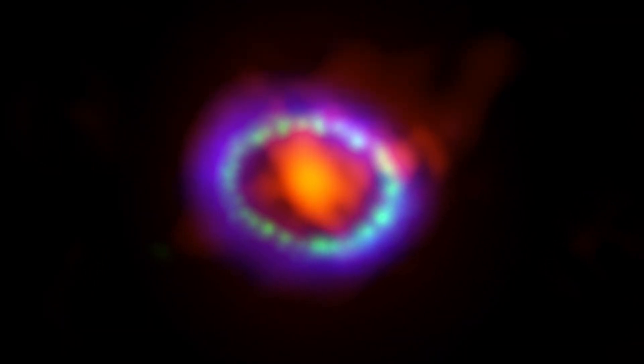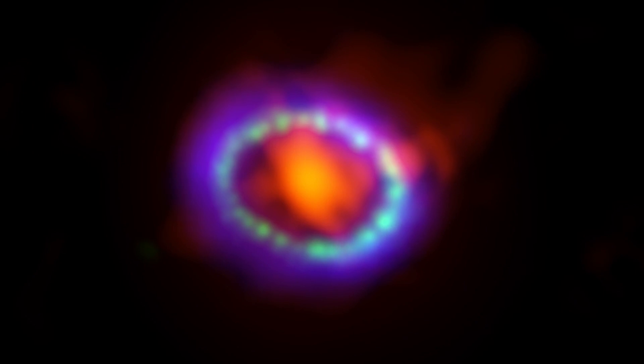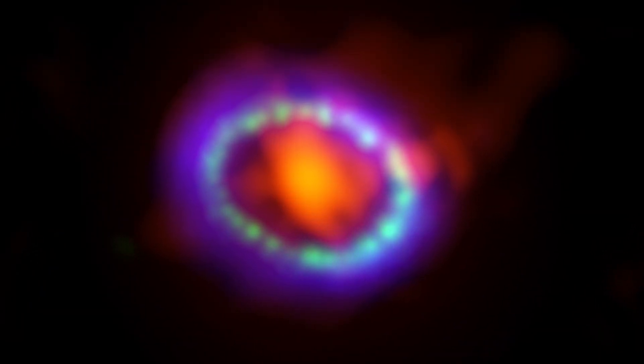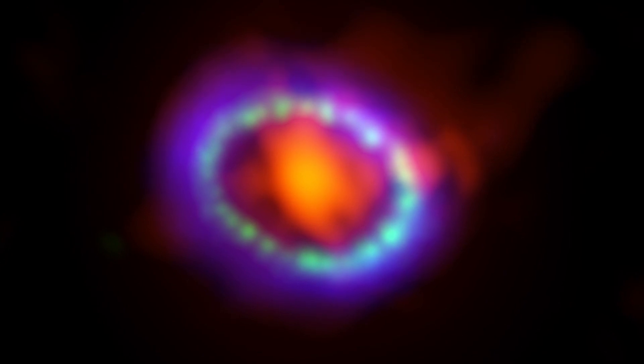Supernova 1987A is the nearest supernova explosion that we've observed to Earth since we've had modern telescopes. We don't always know when we see a supernova in a galaxy what the star was beforehand. We have to be lucky.